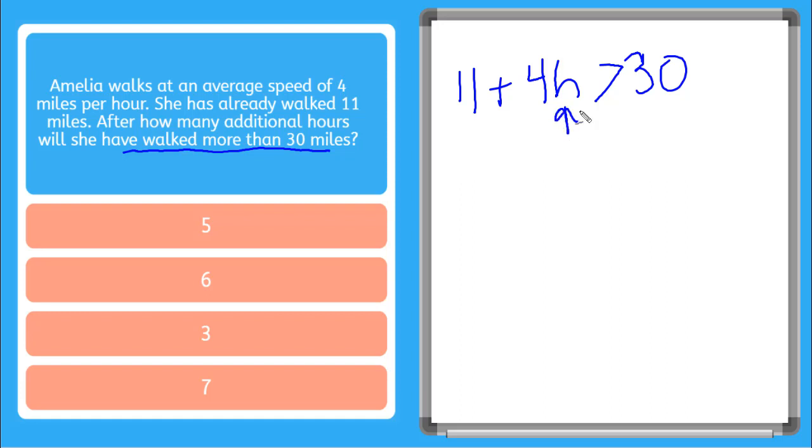And now we need to solve this for H, the number of hours. So the first thing we do is subtract 11 from both sides. So we get 4H is greater than 30 minus 11 is 19.